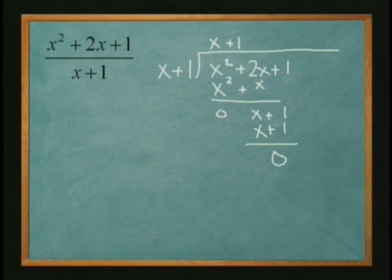So that's a remainder of 0. So x squared plus 2x plus 1 divided by x plus 1 is equal to x plus 1.